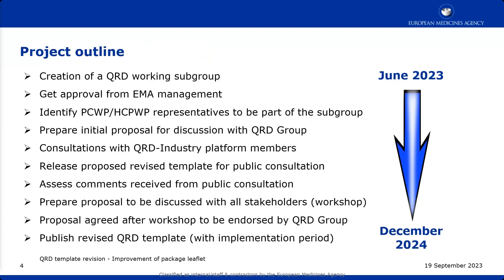Regarding the project outline: we started in June by creating a subgroup of the QRD group, since the QRD group is the owner of the QRD template. We created a small subgroup of nine member states to lead the drafting. We presented the project to EMA management and got the approval. The next step — and that's why we are here — is to identify representatives from your working parties to be part of the subgroup, as you are a key stakeholder and need to be with us drafting the template.